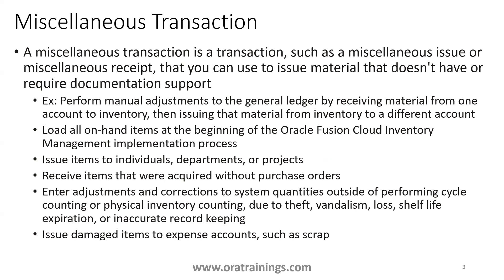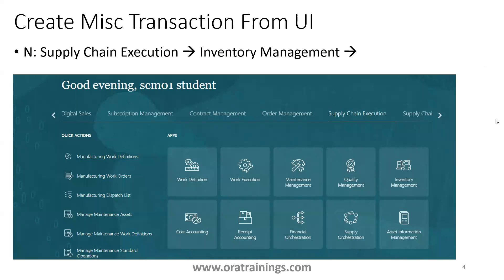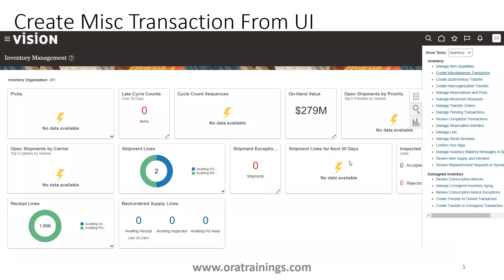Now we'll understand how to create a miscellaneous transaction from the UI. To do so, navigate to Supply Chain Execution and then click on Inventory Management. You'll be navigated to a screen showing a list of tasks available under the inventory section, and then click on Create Miscellaneous Transaction.